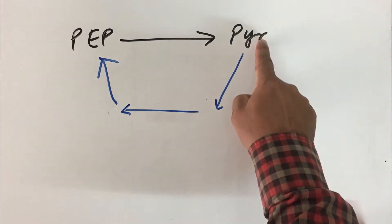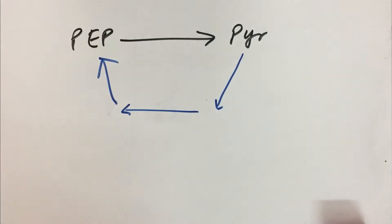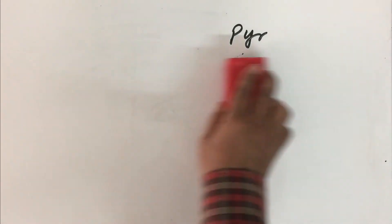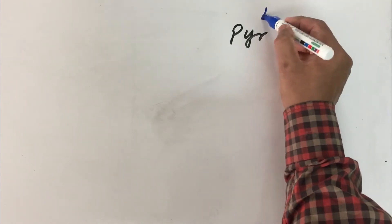So now we are going to convert pyruvate back into phosphoenolpyruvate. Pyruvate is produced from phosphoenolpyruvate as an end product of glycolysis. Pyruvate can also be produced from an amino acid, alanine — we have seen the glucose-alanine shuttle. Now here comes another very important step of gluconeogenesis.